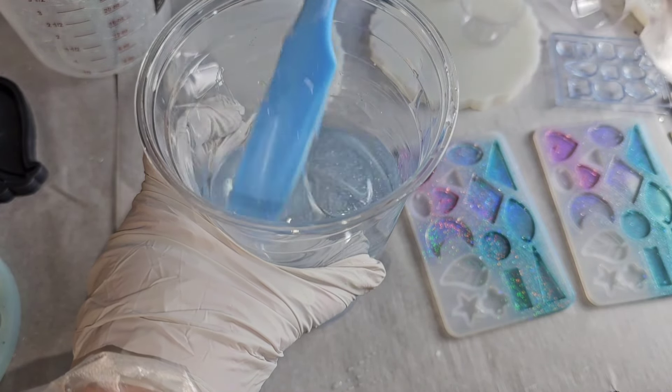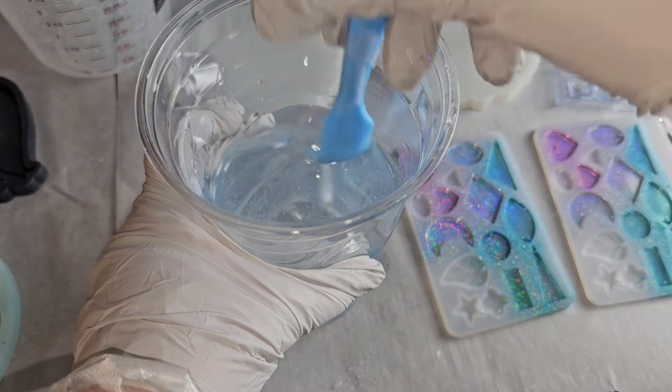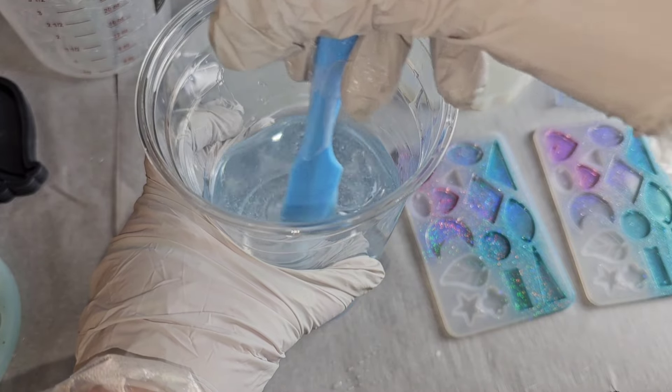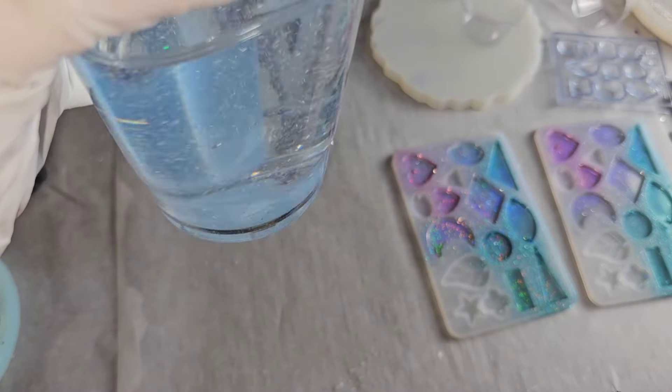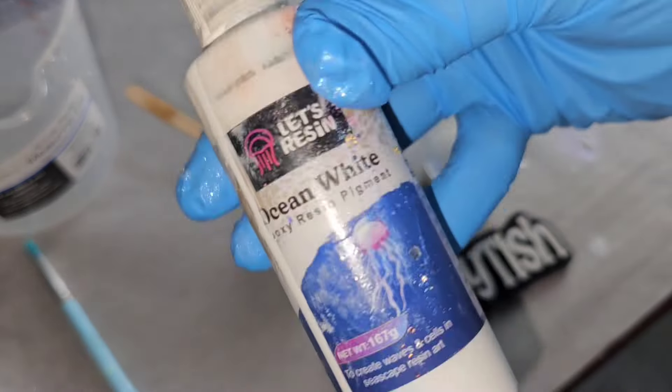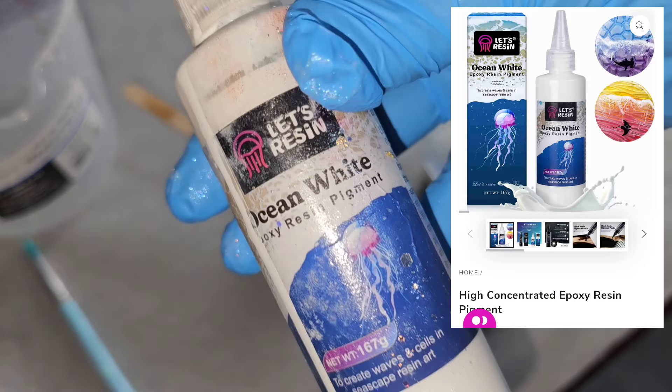Some brands you can do it a little bit colder, but the Let's Resin likes it at about 70. So you want to make sure your workspace is nice and warm and you do want to work in a well-ventilated area as well. So mix that up for three minutes and now we're ready to pour.